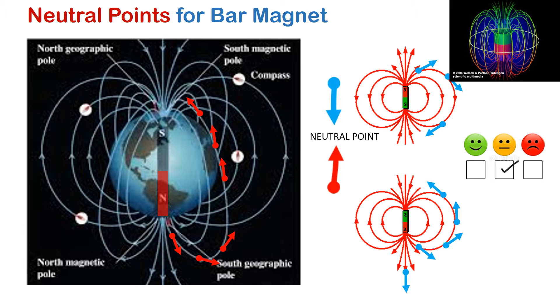For a magnet placed in another position — like here, where the north pole is pointing south — the neutral point would occur in a different position.